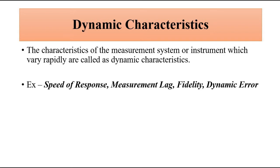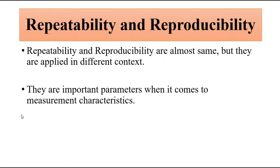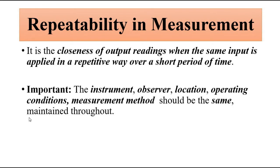In this video we are going to discuss repeatability and reproducibility. Whenever we say repeatability and reproducibility of a measurement system, they almost mean the same thing, but there is a slight difference between the two, and they are very important parameters. Repeatability in measurement is very much related to accuracy and also to precision. Accuracy is the closeness of an instrument reading to the true value — how close the instrument reading is to the exact value.